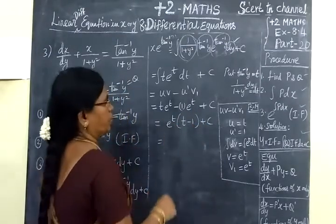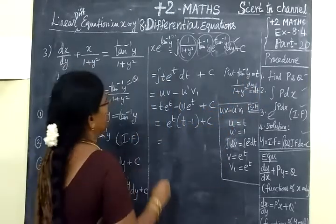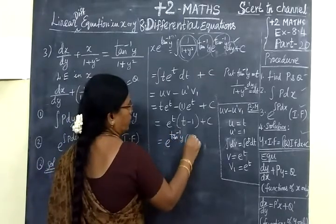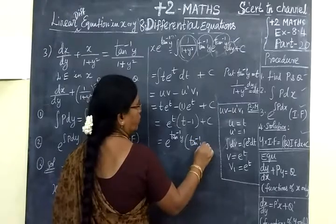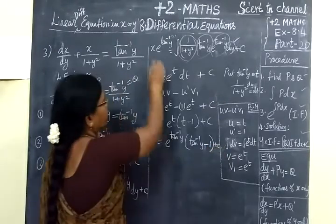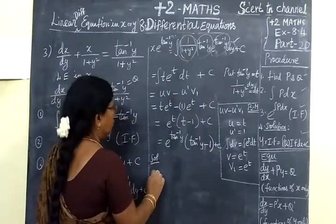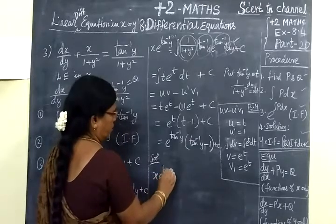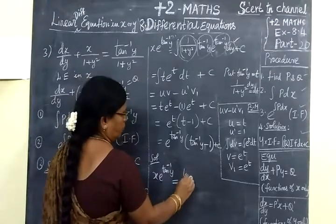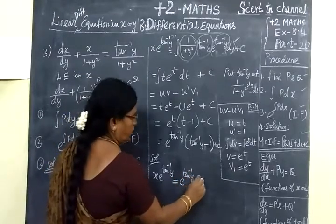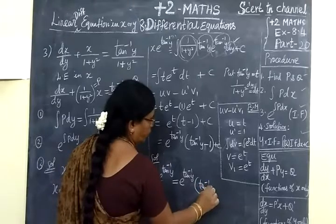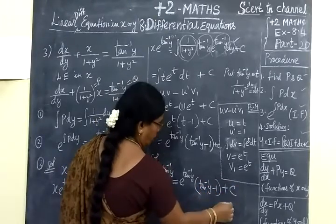Next, replace t back with tan⁻¹y everywhere. So instead of t, write tan⁻¹y. The expression becomes e to the power of tan⁻¹y times (tan⁻¹y minus 1) plus c. So the final answer is: x times e to the power of tan⁻¹y equals e to the power of tan⁻¹y times (tan⁻¹y minus 1) plus c.